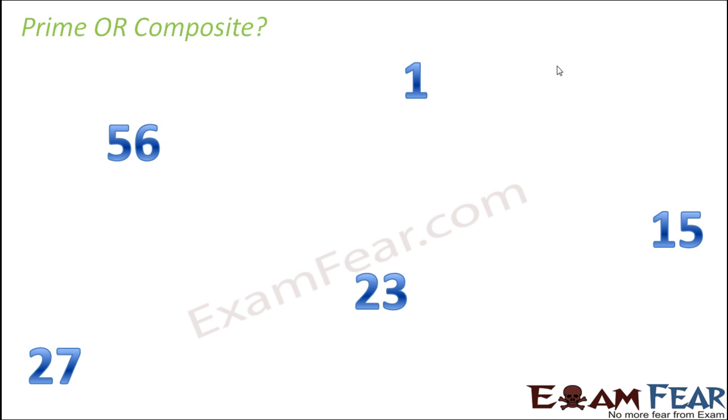So let us look at these numbers on the screen and decide whether it is a prime or a composite number. So let us start with 56. So what are the different ways we can write 56? It can be written as 1 into 56. It can be written as 2 into 28. Do you think it can be divisible by 3? No. It is divisible by 4. 5? No. 6? No. 7? Yes. 7 into 8 is 56.